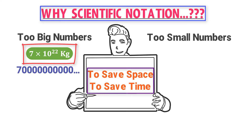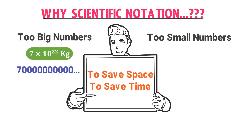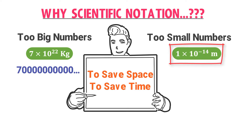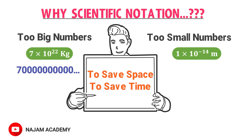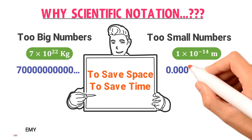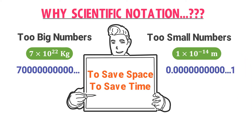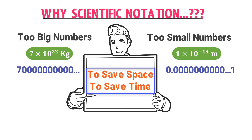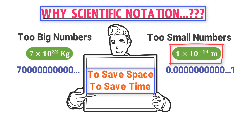Another example: the diameter of an atomic nucleus is 1 × 10⁻¹⁴ meters. Written in ordinary form, it would be 0.00...01 meters — up to 14 decimal places. This covers large space and is time-consuming to write. To save both time and space, scientists introduced scientific notation, or standard form, for such very small numbers.